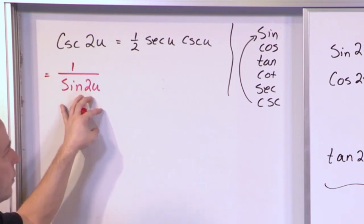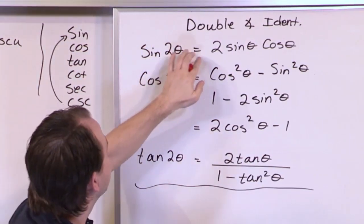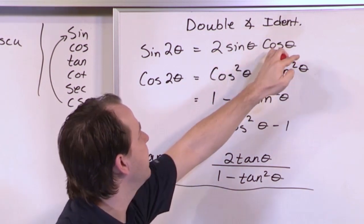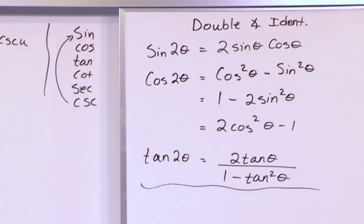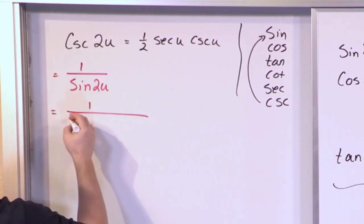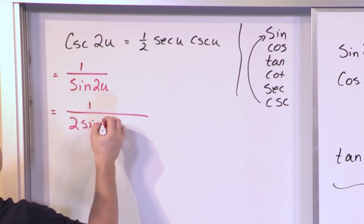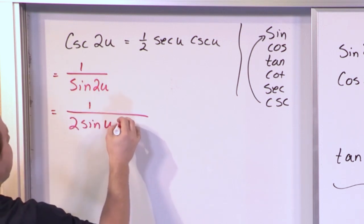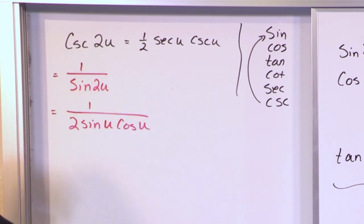Now we have a double angle, right? We have a double angle here, which is equal to 2 times the sine of the angle times the cosine of the angle. So we have 1 over, and then we have 2 times the sine of what is the angle, u, times cosine of the same angle, u.